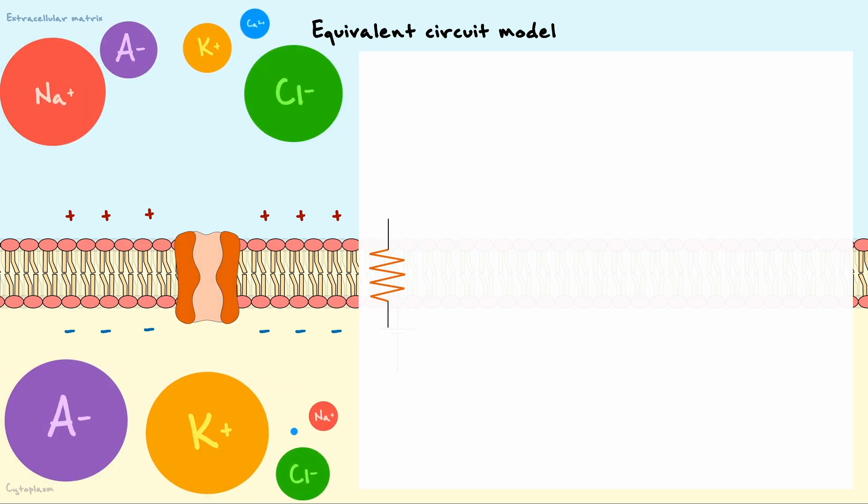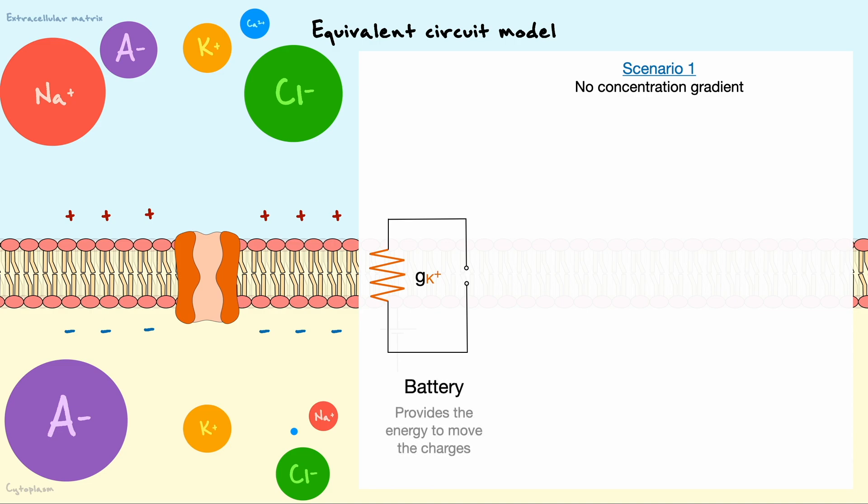In this simple circuit, you will recognize in orange the potassium channel shown as the resistor symbol. This conductor has a conductance value of lowercase g that is associated with the potassium channel. Okay, now let's consider a first scenario where there is no potassium gradient across the membrane. In this scenario, the only force that acts on the potassium to push it across the membrane is the membrane potential created by the other ions.